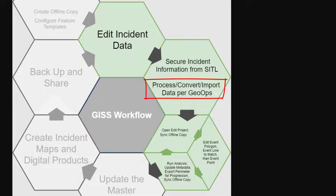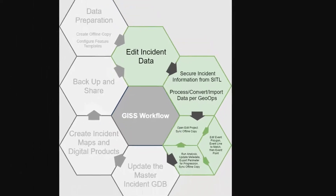As a GISS, you should be prepared to receive incident data from a variety of sources and be able to process or convert that data for input into the National Incident Feature Service. In this video, I'll demonstrate how to work with data received via field data collection to prepare for creating my FHIR perimeter.